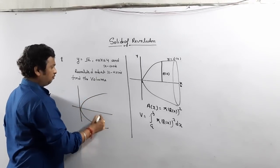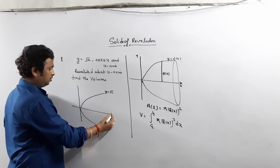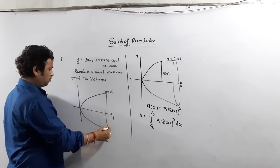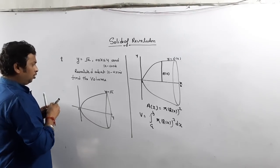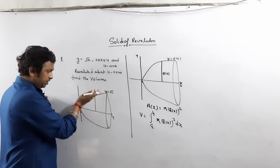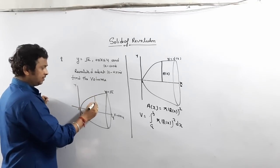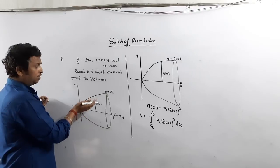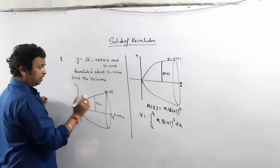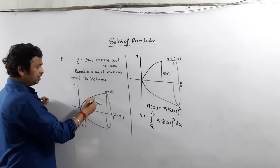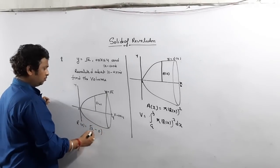The parabola y² = x exists between 0 and 4. So x goes from 0 to 4. Now what is the r(x) value? Because it is revolved about the x-axis, the y value is r(x). How do we calculate r(x)? Upper value of y minus lower value of y. What is the upper value of y? Root x. What is the lower value? Zero. So r(x) equals √x.